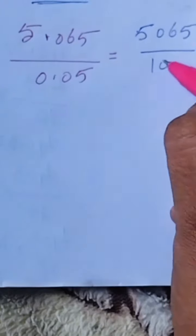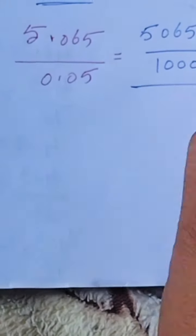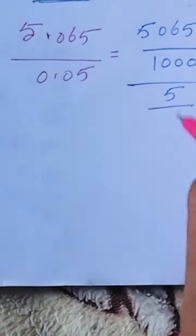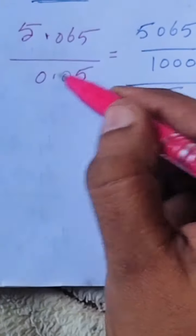Three zeros means we write thousand. By 0.05, how we write this number? 5 by 100, it means two zeros.